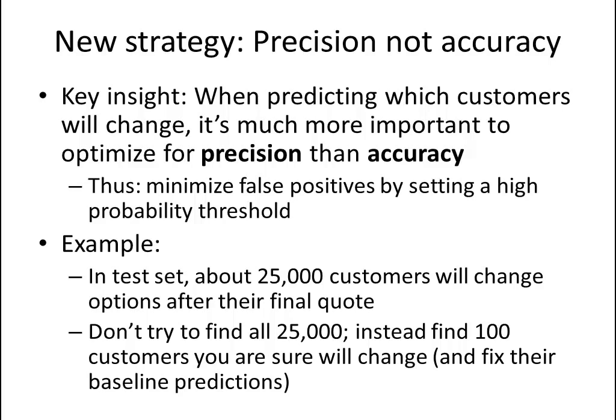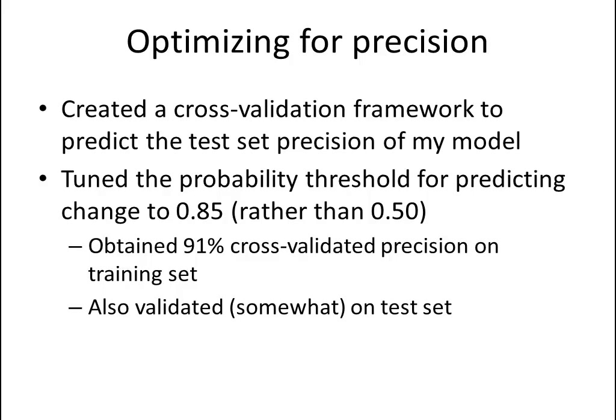However, all is not lost because I had a new insight. When predicting which customers will change, it's actually much more important to optimize for precision than accuracy — in other words, we need to minimize false positives by setting a high probability threshold. In the test set, about 25,000 customers will change options after their final quote, but we don't need to find all 25,000. Instead, we need to find perhaps 100 customers that we are sure will change and then fix their baseline predictions. I created a cross-validation framework, changed the probability threshold from 0.5 to 0.85, and validated that this approach was indeed working.